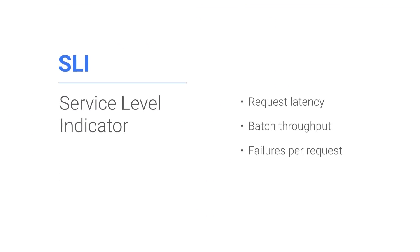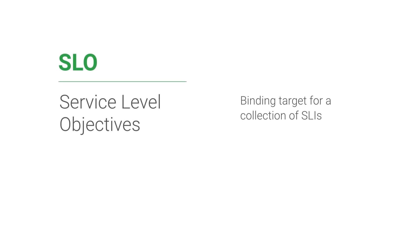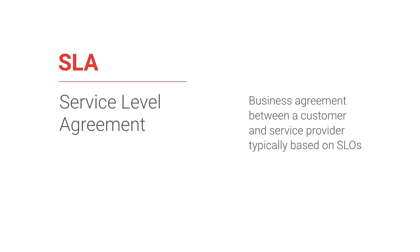In the previous video, we discussed the differences between SLIs, SLOs, and SLAs. SLIs are quantitative measurements, like latency. SLOs are the amount of time that an SLI can be out of specification. And SLAs are business agreements with explicit consequences for failing to deliver service.